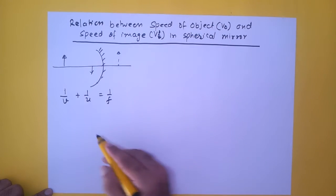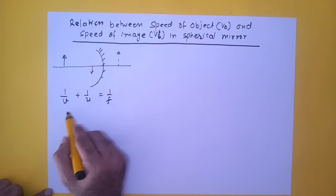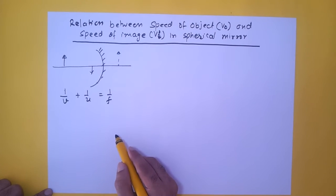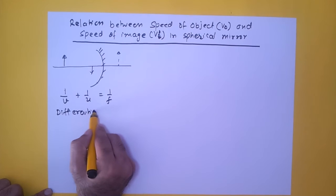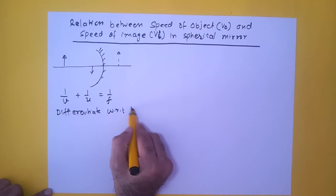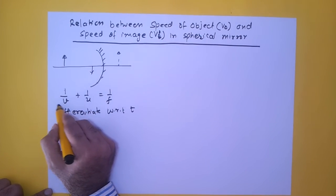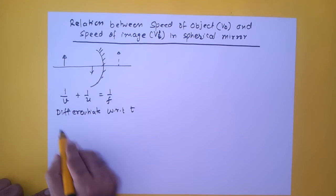Now if you want to find out speed of the object and speed of the image, quite naturally we will differentiate them with reference to t. So differentiate with respect to time t. So differentiation of 1 upon v is minus 1 upon v square dv by dt.